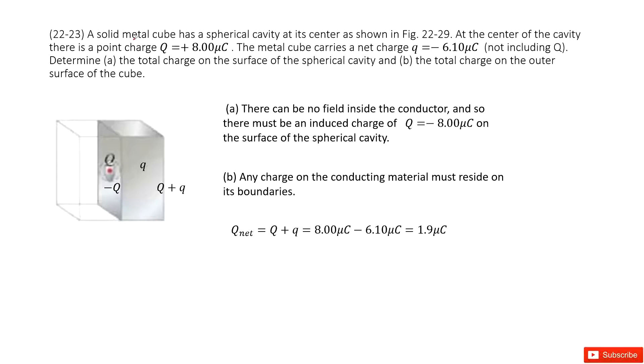We can see we have a solid metal cube, the keyword metal cube, and there is a spherical cavity. At the center located a point charge called Q, right? And then this metal cube carries the net charge, the smaller q. I ask you, first of all, the total charge on the surface of the spherical cavity.